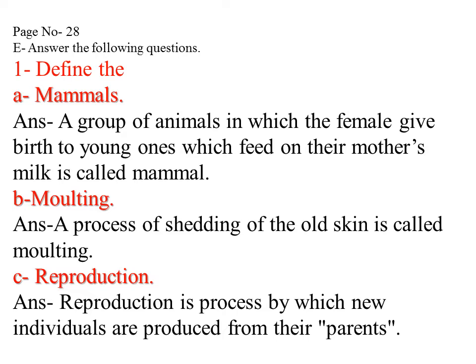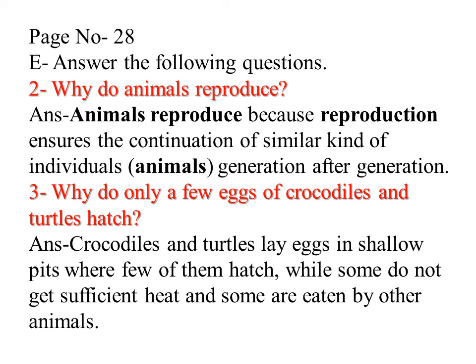Question number 1: define — first, mammal; second, molting; third, reproduction. Answers you can see and write in your science notebook, from page number 28.